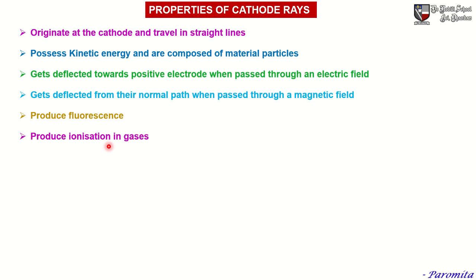When passed through a gas, the energetic constituent particles of cathode rays attack the atoms of the gas and force them to get ionized. Cathode rays also produce X-rays when they strike heavy metals. When cathode rays are made to fall on heavy metals such as tungsten, silver, copper, etc., X-rays are produced.